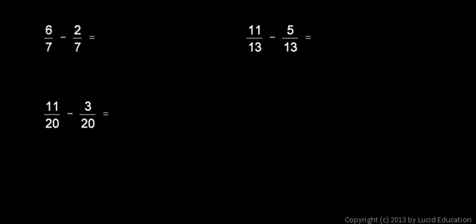And here are a few examples showing subtraction of like fractions. Six sevenths minus two sevenths would be four sevenths, because six minus two is four. Just like having six boxes and taking away two boxes would leave you with four boxes, or six apples minus two apples is four apples. Six sevenths minus two sevenths leaves you with four sevenths.